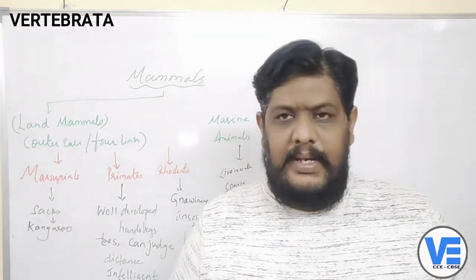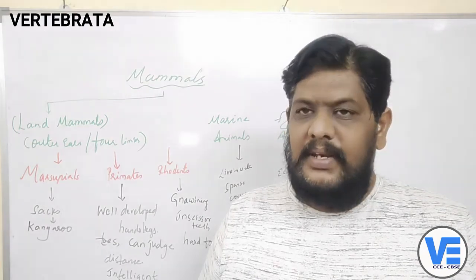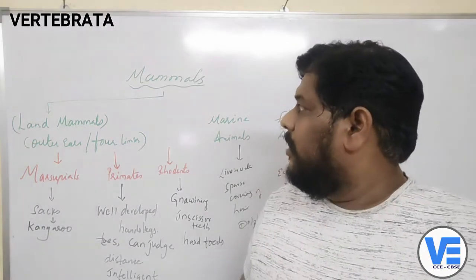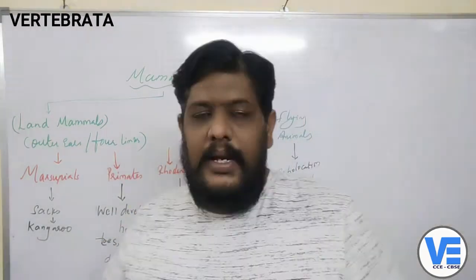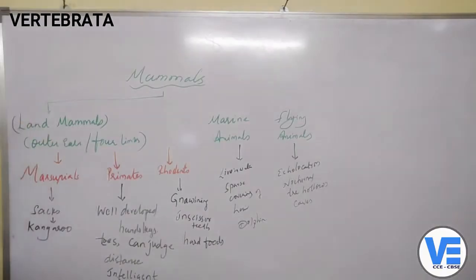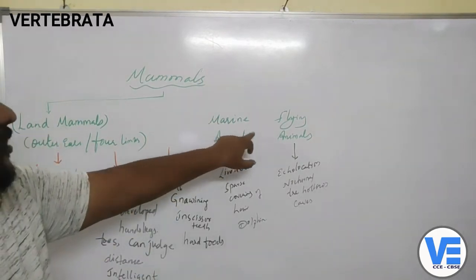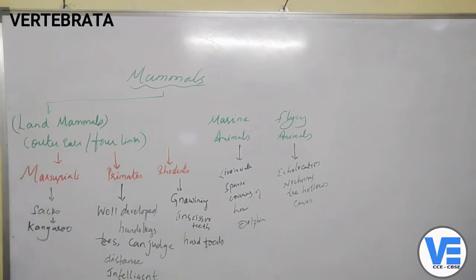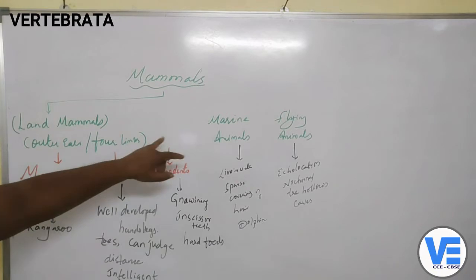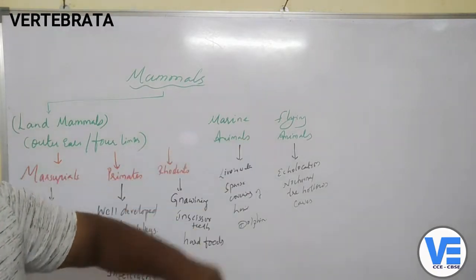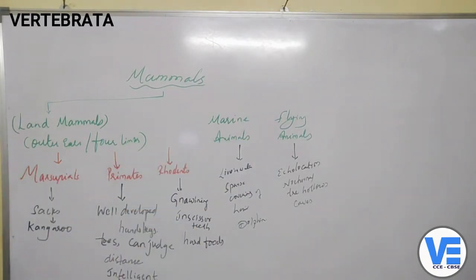The last class is called Mammalia, which is a very important group. Mammalia is divided again into three different kinds: one is land mammals, second one is marine animals, and third one is flying animals.